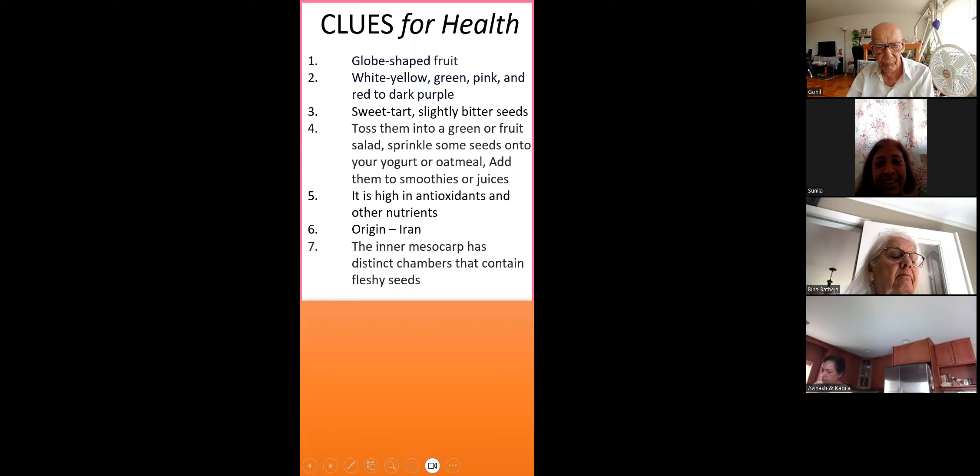Globe-shaped fruit, white, yellow, green, pink, and red to dark purple. Sweet, tart, slightly bitter seeds. Toss them into green or fruit salads. Sprinkle some seeds onto your yogurt or oatmeal, add them to smoothies or juices. Origin is Iran, has distinct chambers that contain fleshy seeds. Grapes? This time I thought you will answer. Pomegranate. Actually, I can't use for this one. We'll go for the next one.